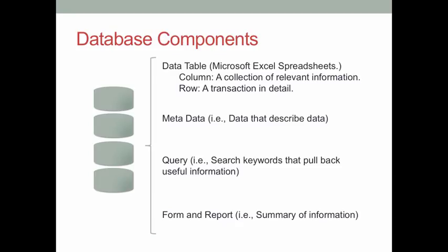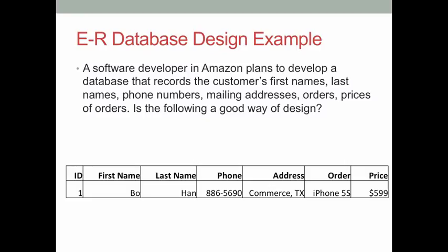We will focus on query and form designs when we move to the Microsoft Access training. Today we will focus on the fundamental concepts — the primary key and the foreign key. Before I introduce these two concepts, let me ask you a question. Suppose a software developer is designing a database for an e-commerce website. The website wants to record customer information and order information. Currently, the developer records all information — customer's first name, last name, contact information, mailing address, and what the customer bought — into one data table. Do you think this is a good data management process? Why or why not? Let me give you about one minute to think about your answers, and then I will share the answers with you.